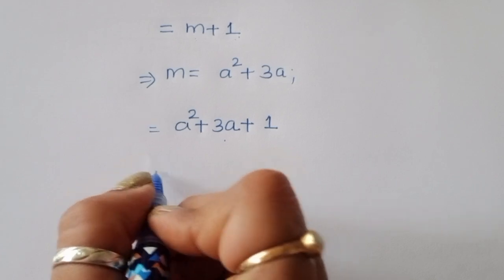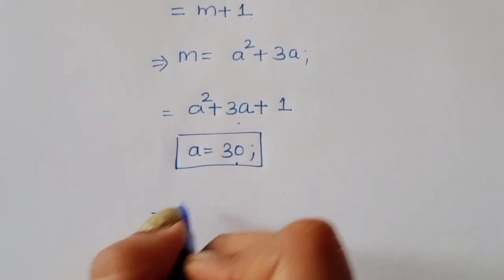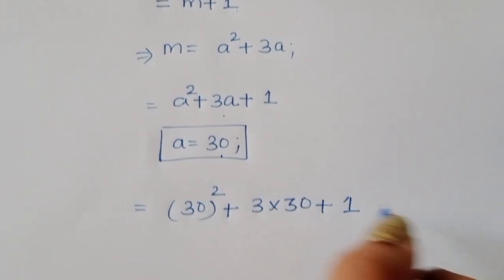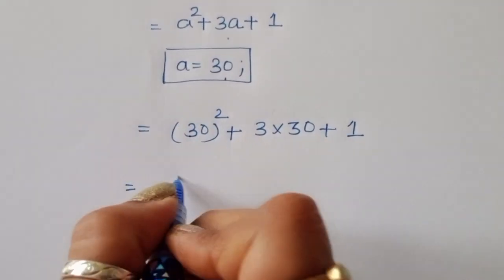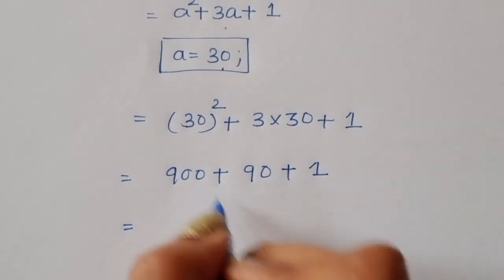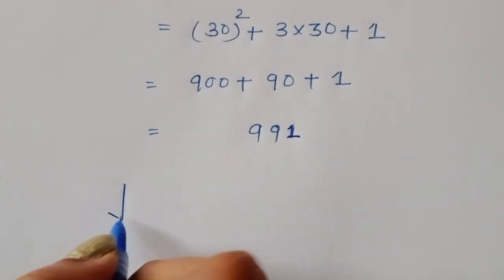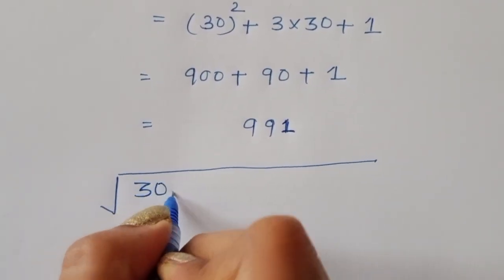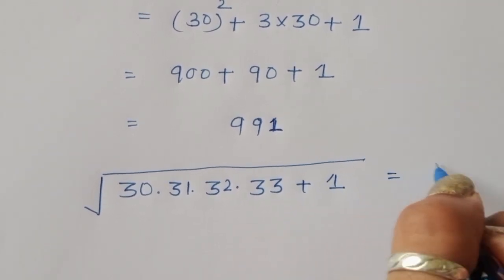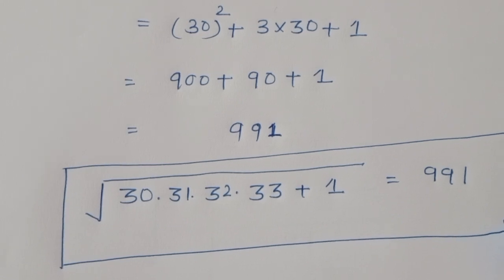Since a equals 30, we substitute: a squared is 900, plus 3 times 30 which is 90, plus 1. That gives 900 plus 90 plus 1 equals 991. Therefore, the square root of 30 times 31 times 32 times 33 plus 1 is equal to 991. This is the solution — a very easy method for this type of equation. Thank you.